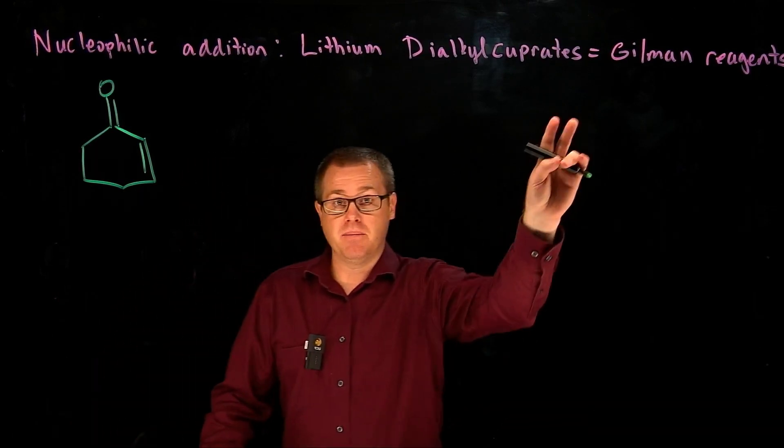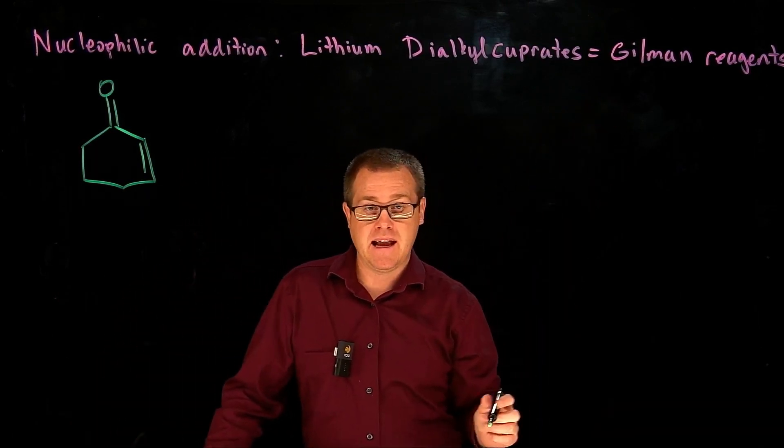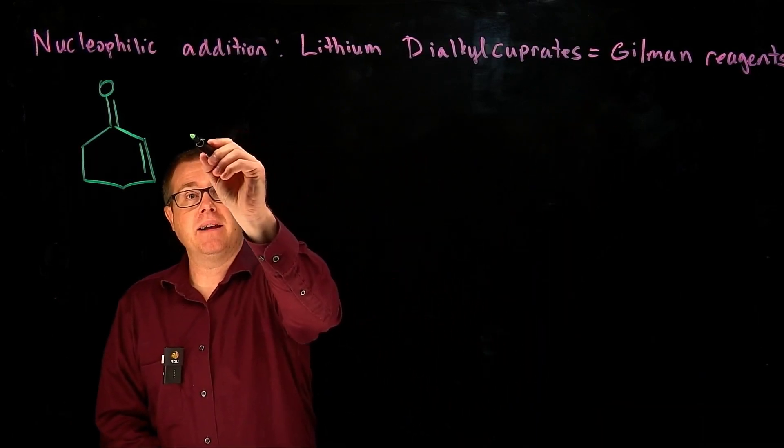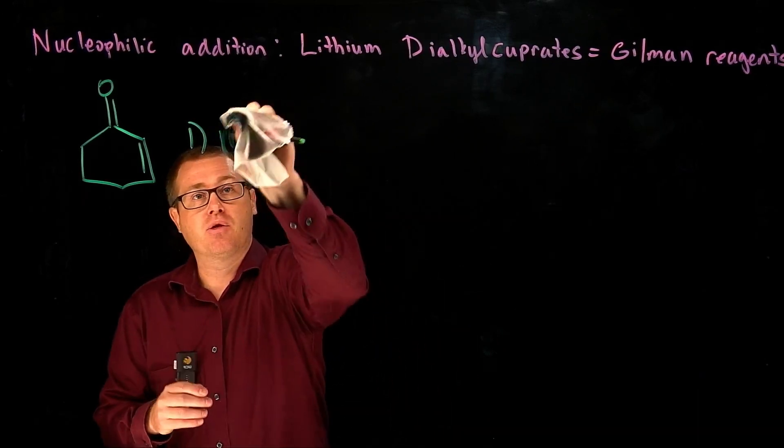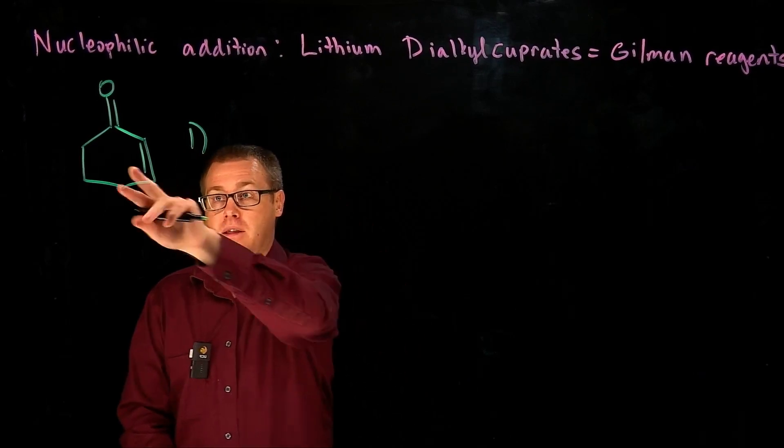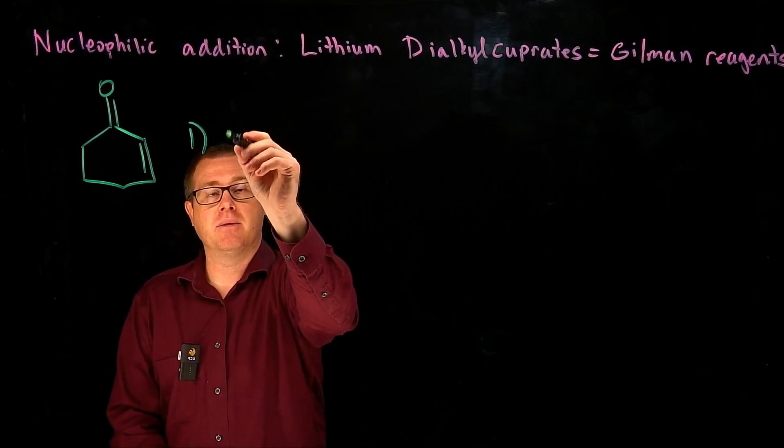But before we jump into what a Gilman is and how it reacts, let's remind ourselves of doing the Grignard reagent with alpha-beta-unsaturated carbonyl compound.